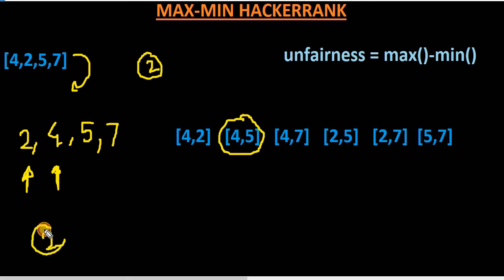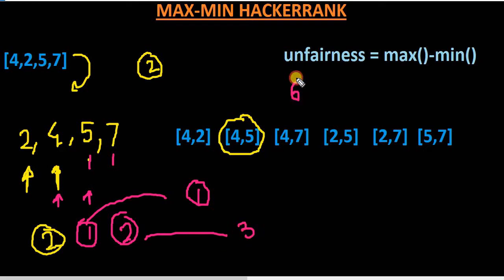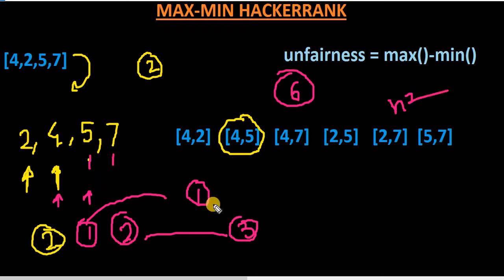For k equal to 2 on the sorted array: comparing 2 and 4 gives difference 2; comparing 4 and 5 gives 1; comparing 5 and 7 gives 2. The minimum difference is 1, found in just three iterations instead of six. Generating all subsets took O(n²) before, but sorting and comparing can be done in O(n log n).